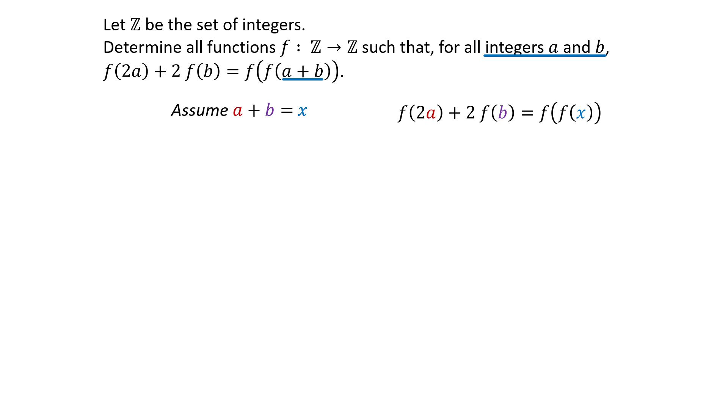To determine the nature of the function, we can substitute different integer values for A. When A equals 0, B equals X, and we get F of 0 plus 2F of X equals F of F of X.